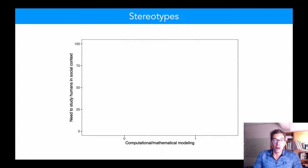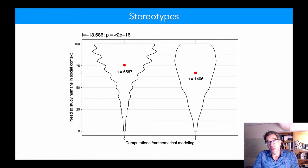Some stereotypes. People who use computational and mathematical modeling are less into the whole social context thing. Still think it's quite important, but less so.